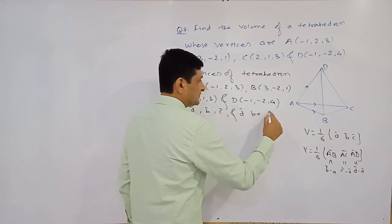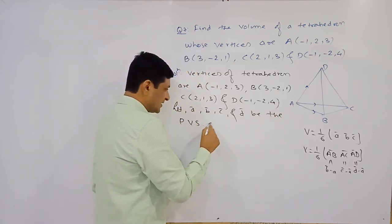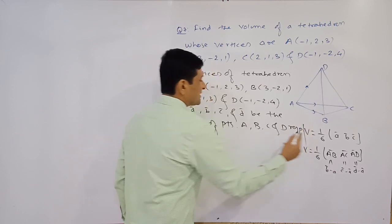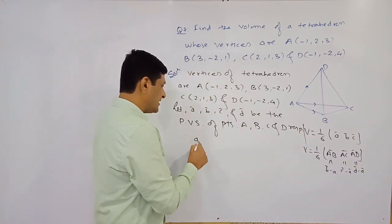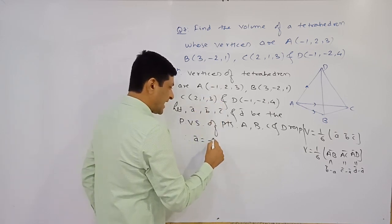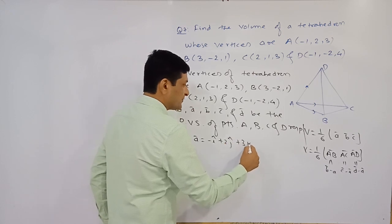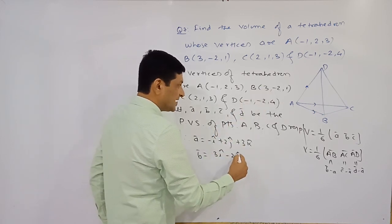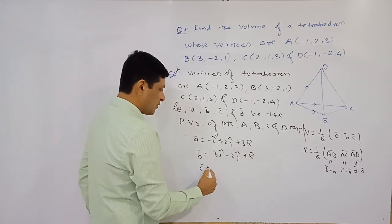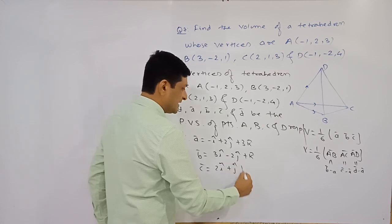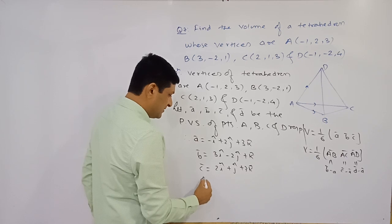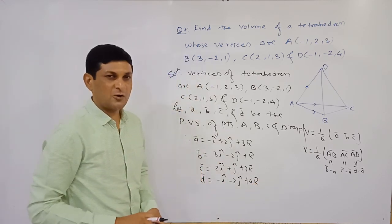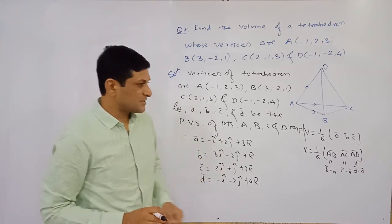Let a̅, b̅, c̅, d̅ be the position vectors of points A, B, C, D respectively. From coordinates: a̅ = −i cap + 2j cap + 3k cap, b̅ = 3i cap − 2j cap + k cap, c̅ = 2i cap + j cap + 3k cap, d̅ = −i cap − 2j cap + 4k cap.